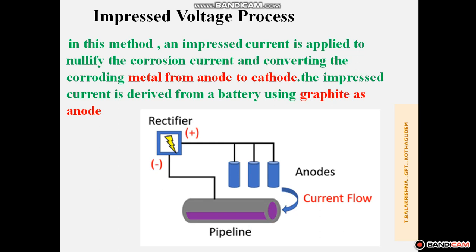This process is called the impressed voltage process. In this method, an impressed current is applied and nullifies the corrosion current, converting the corroding metal from anode to cathode. The impressed current is supplied from the battery using graphite as the anode.